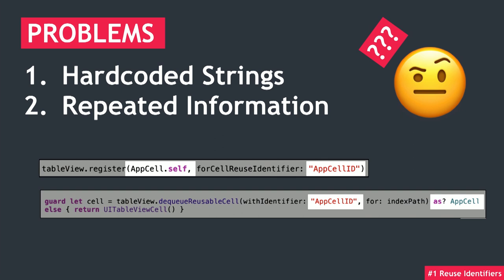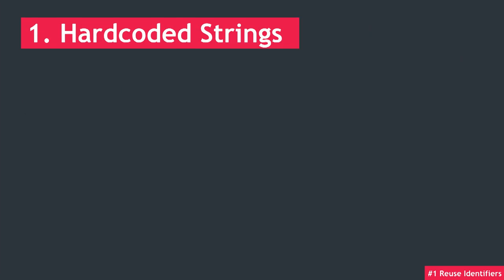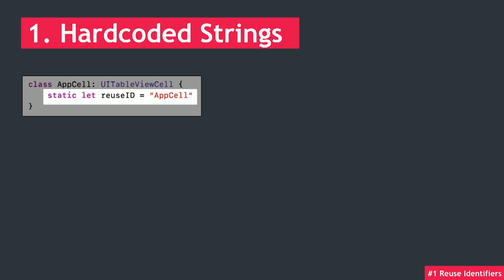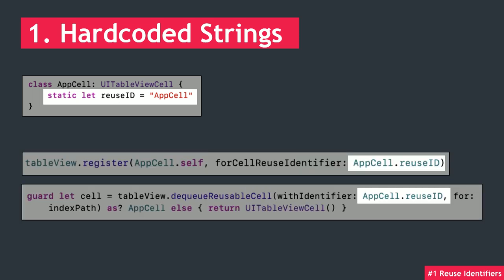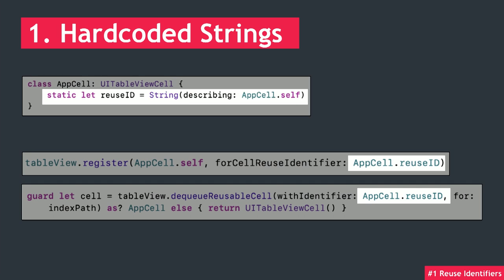And the second reason is that both when we register the cell and when we dequeue it, we're giving the table view repeated information about the cell. Why do we need to do that rather than just get all that info through in one go? For our first problem, we have a couple of options. We could add a static constant on our cell class — that's better because at least we don't have to type out the string twice, but it's just kind of hiding the problem. Instead, we could use the string describing method for our reuse ID constant and never have to use the string literal again. But we'd still have to do this on every cell subclass that we create. So can we do something to our UITableViewCell base class so that all of its subclasses automatically have a reuse ID?